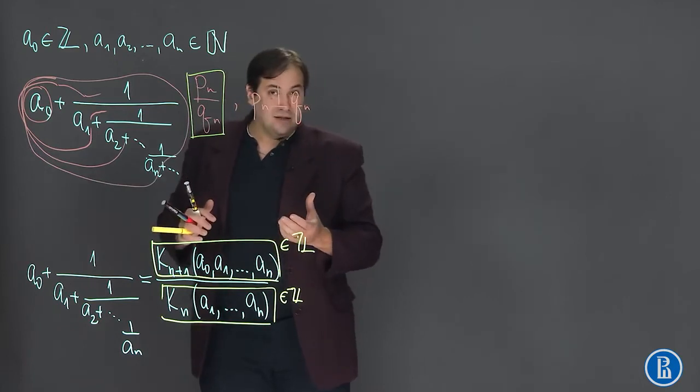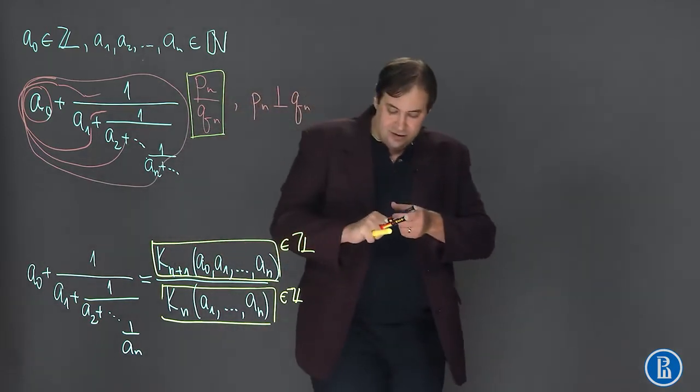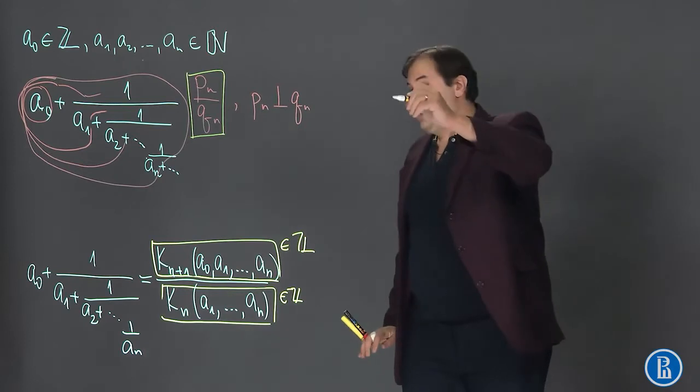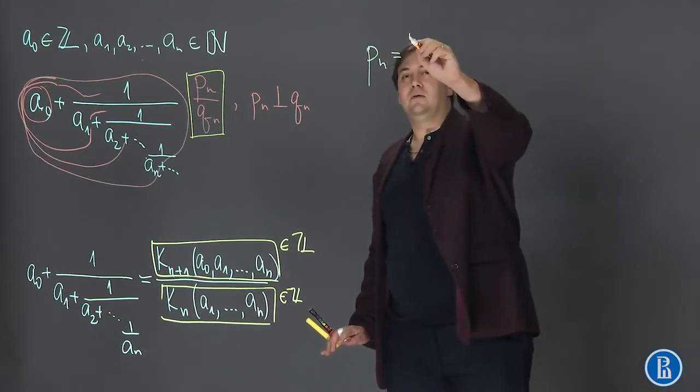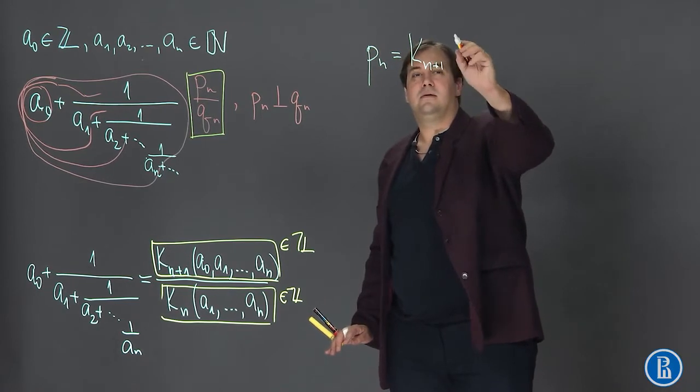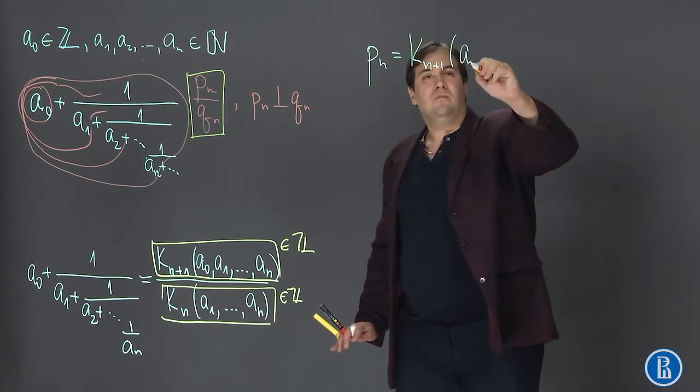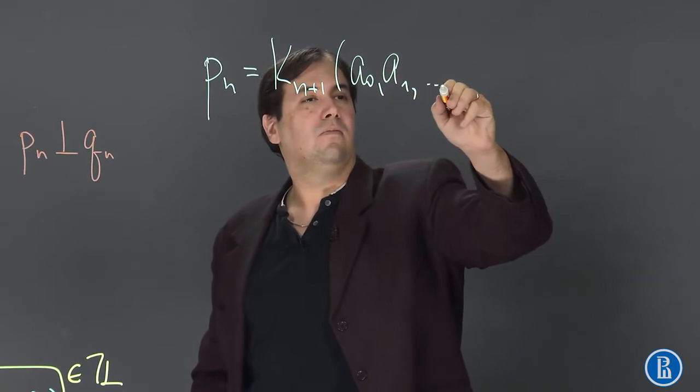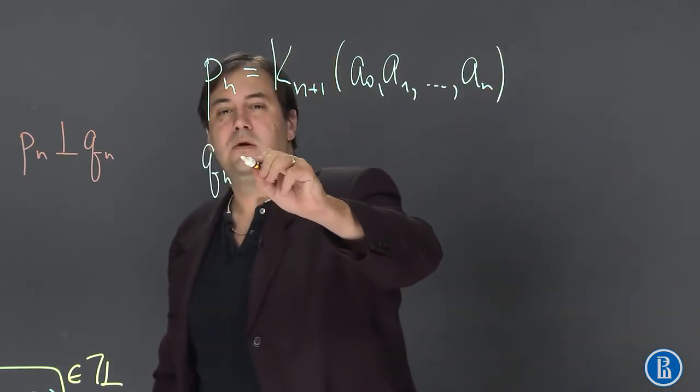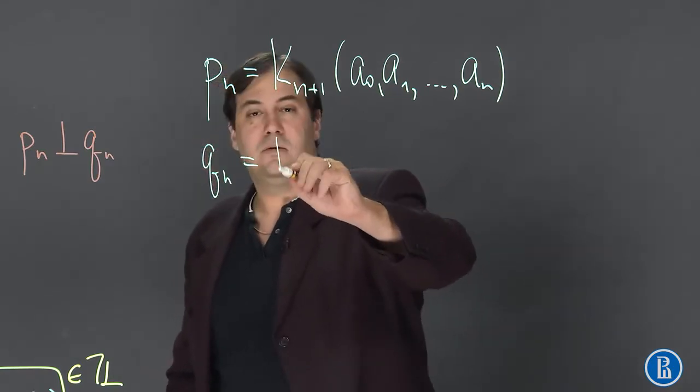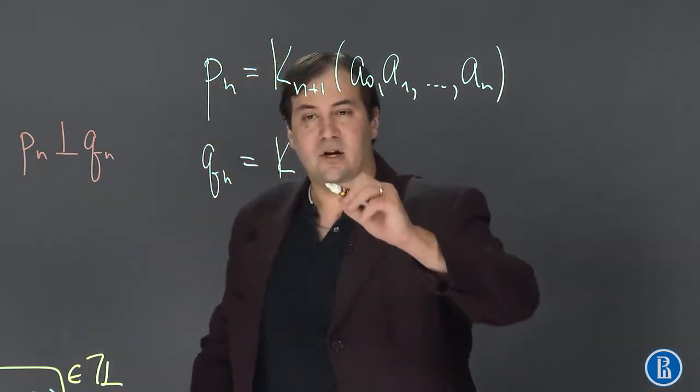But the question is, can we be sure that P is equal to K and Q is equal to K in the denominator?